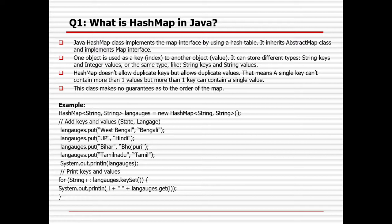Why are we using HashMap and the map interface? Suppose for a student, if we want to store the name or roll number, we can use the list interface. But if we need to store the roll number along with the name, the list interface will not support this.